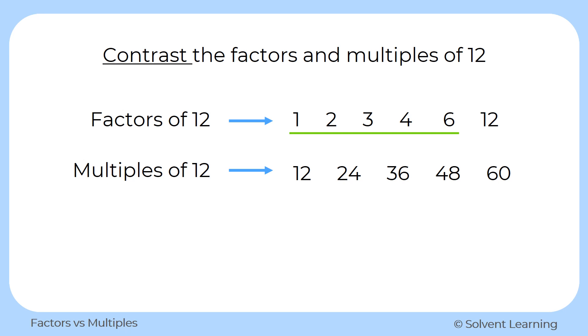Also if you notice that all of those factors, other than the number 12, are going to be smaller than 12. If we look at the multiples, all of the multiples, other than the number 12, are going to be larger than the number. So that's a difference that factors and multiples have from each other.